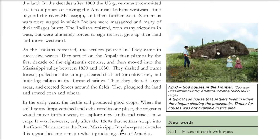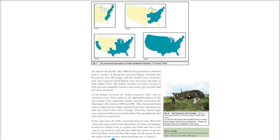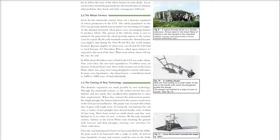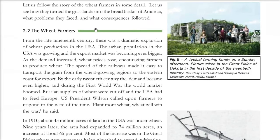After the 1860s, the region across the Mississippi became the major wheat producing area of America — the wheat producing basket. That is why it came to be called the bread basket. This region became the major wheat producing area of America, and we need to understand how this happened and what challenges and consequences followed.